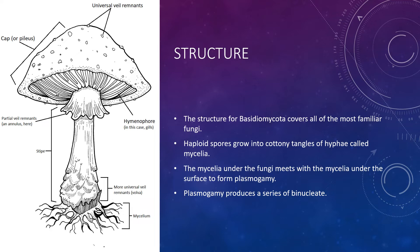These dikaryotic hyphae reach above the ground and form the fruiting body or basidioma. The cells of the basidioma cannot divide by normal mitosis because they have to produce two daughter cells that have a copy of both parental nuclei.